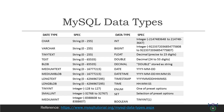Finally, let's talk about blob and text data types. These data types are used for storing large amounts of data such as images or long text strings. The storage size of these data types depends on the size of the data being stored. In conclusion, understanding the storage requirements of each data type in MySQL is important when designing and creating tables, as it can help you optimize storage usage and ensure your database runs efficiently.